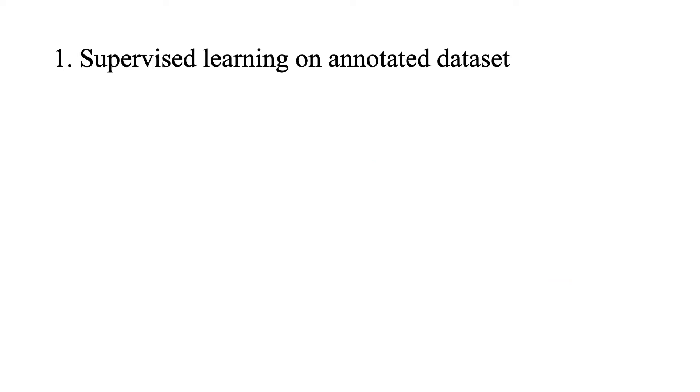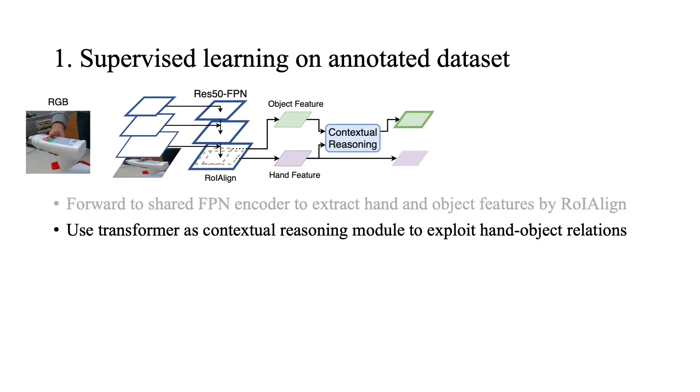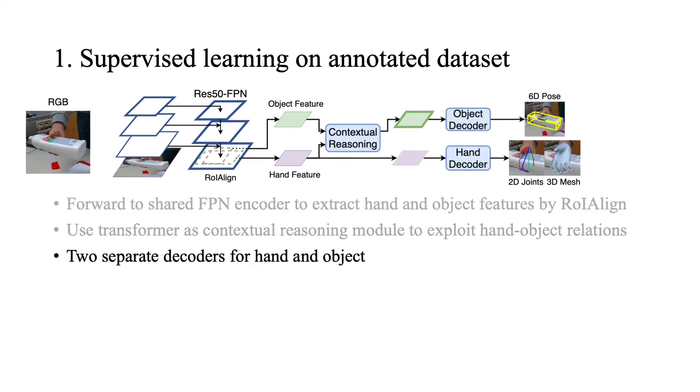In the first stage, we perform supervised learning on an annotated dataset. The input RGB image is sent to the shared encoder to extract hand and object features by ROI-align. Then we use transformer architecture to explore the synergy between hand and object features via the contextual reasoning module, where query positions in object features are enhanced by fusing information from the interaction region.